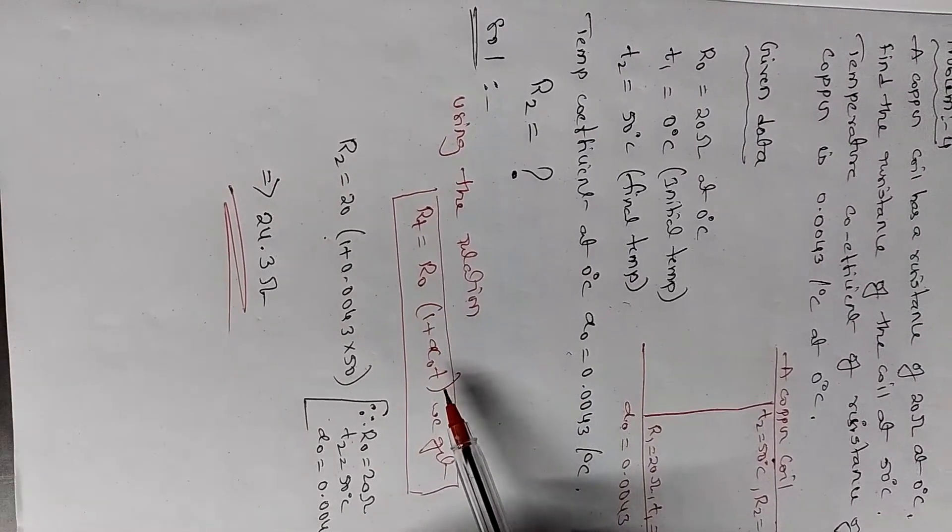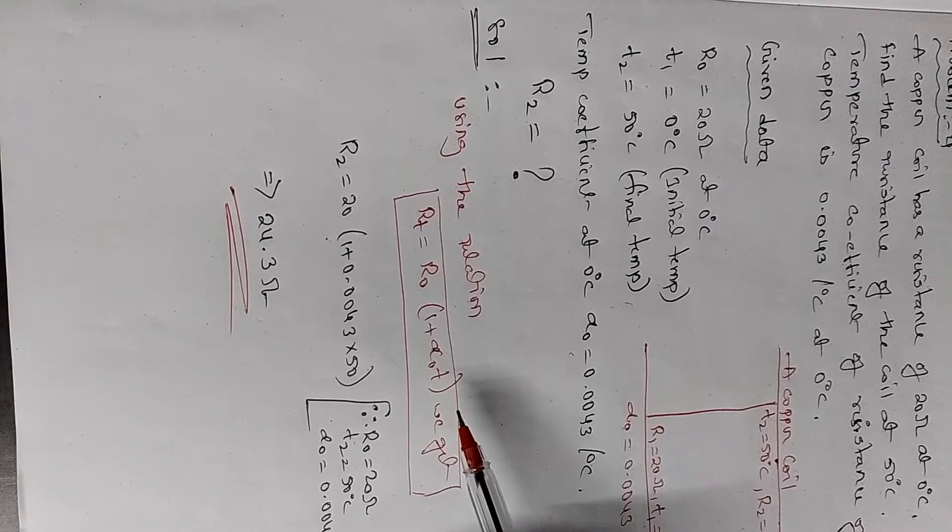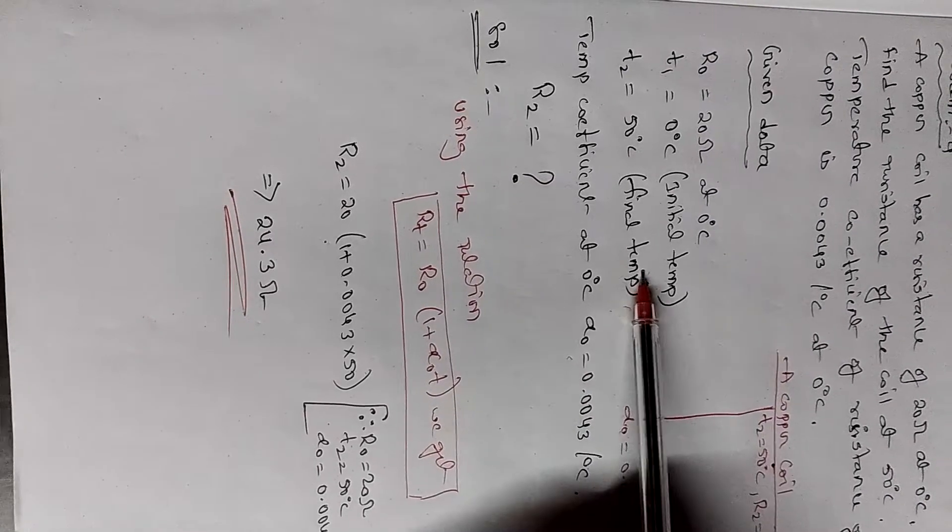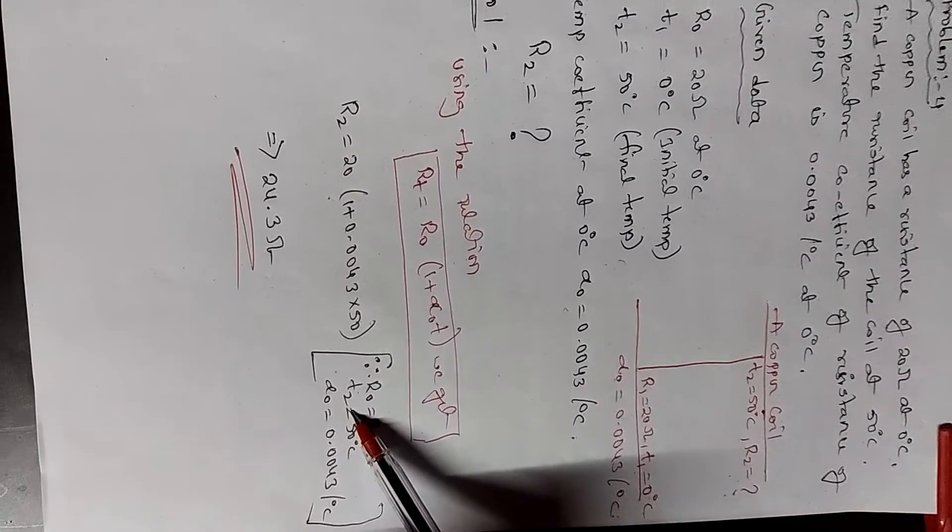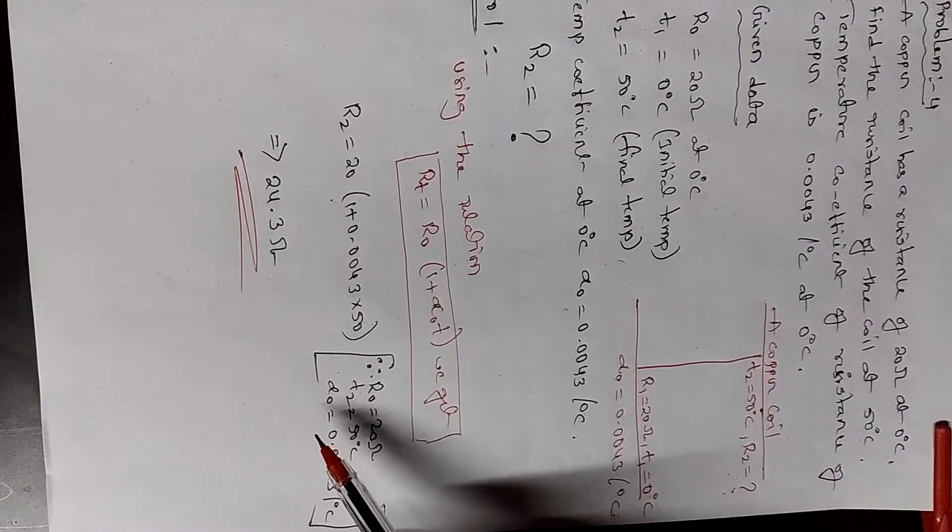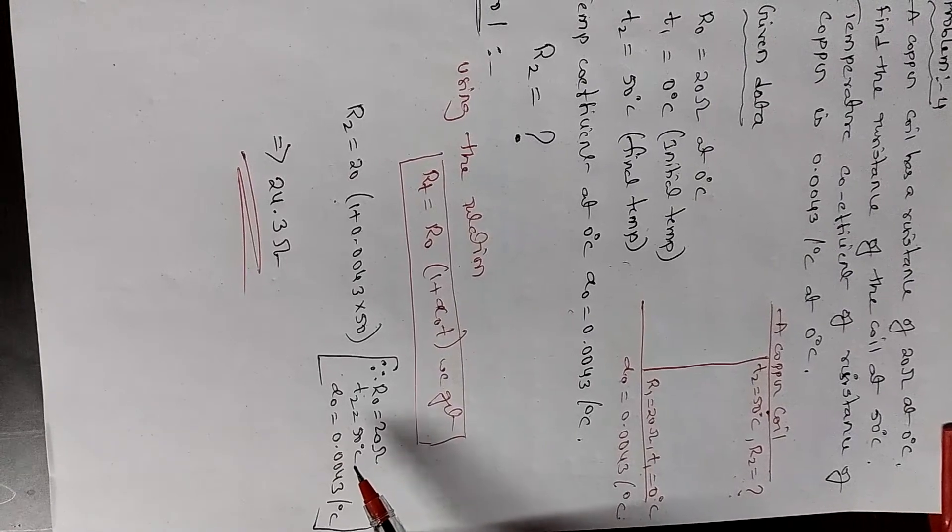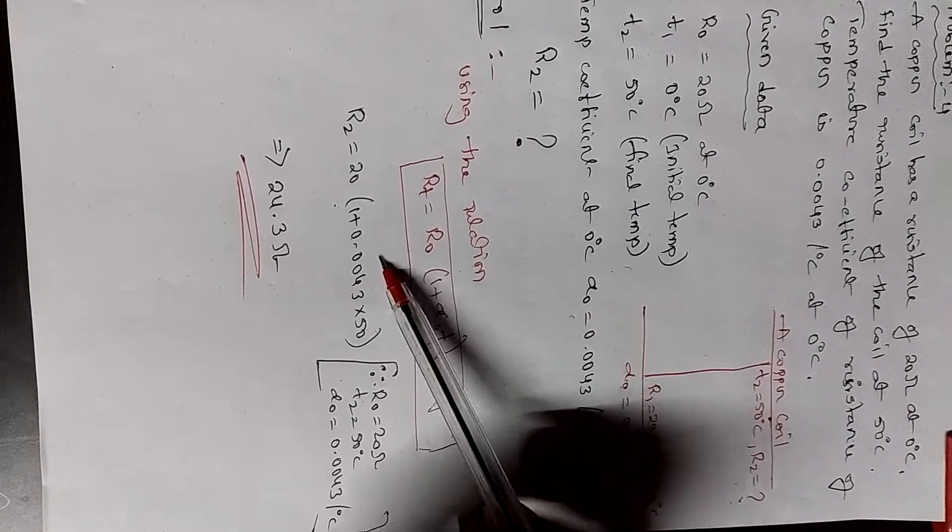We will get, after submitting all these values into this equation: R naught equal to 20, T2 equal to 50 degrees, alpha naught equal to 0.0043 per degree centigrade.